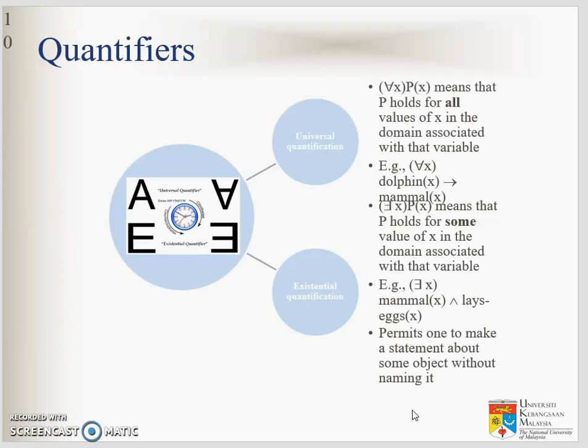What are quantifiers? We have the upturned A as a universal quantifier. That's mean it says that everything, every X, every P, every Y, every man, every boy. In this case, for every X where X is a dolphin, that's mean every dolphin. Then X is a mammal. So dolphin is a mammal. All dolphin is mammal.